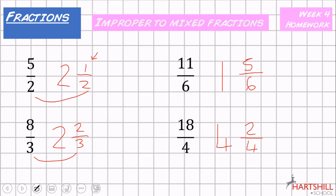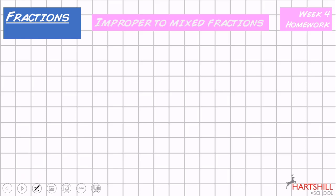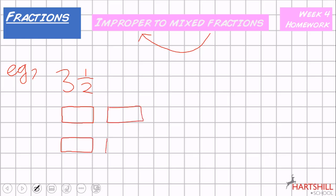Now we're going to go from a mixed fraction back to an improper fraction. Example seven: three and a half. I'll sketch this out — we've got three wholes and a half. The denominator stays the same. Counting up the halves: one, two, three, four, five, six, seven. So converting three and a half into a top-heavy fraction gives seven over two.